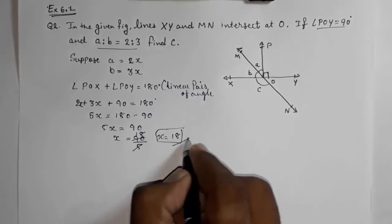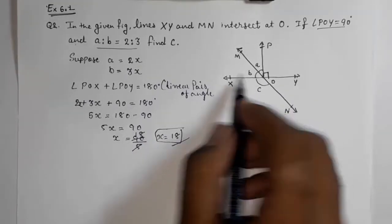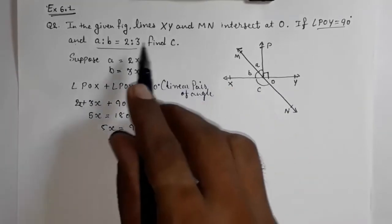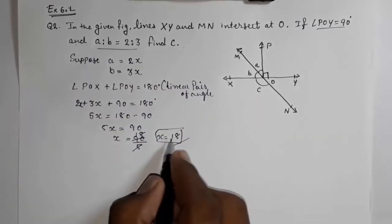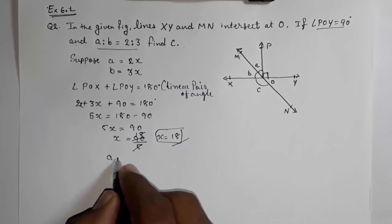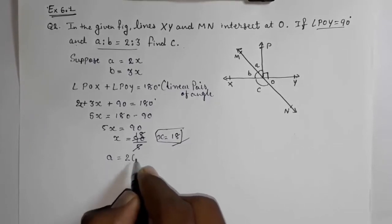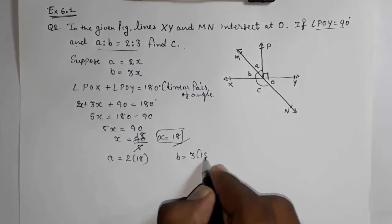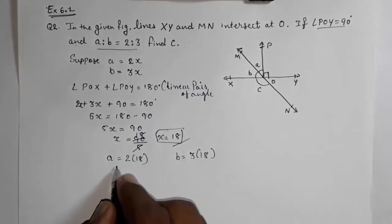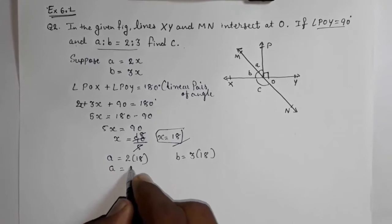Now you got x. We don't want x, we want first a, with the help of b we will find c. So now you got x. Now a, that will be 2 into 18, and b that will be 3 into 18.